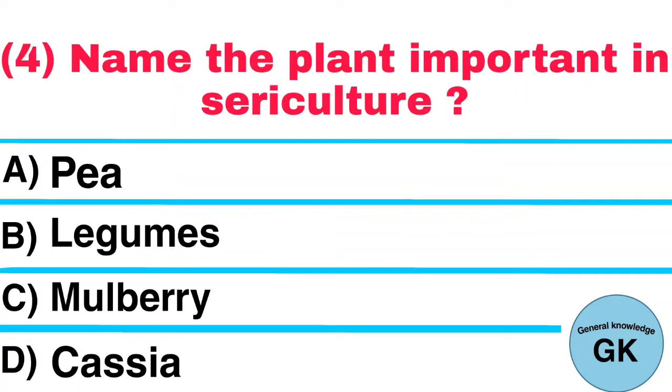Question number 4. Name the plant important in sericulture: A. P, B. Legume, C. Mulberry, D. Cassia. Answer: Mulberry.